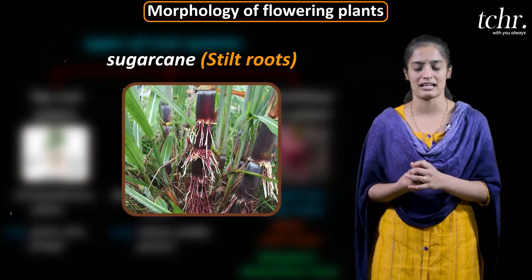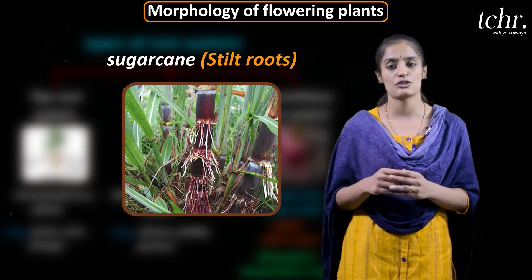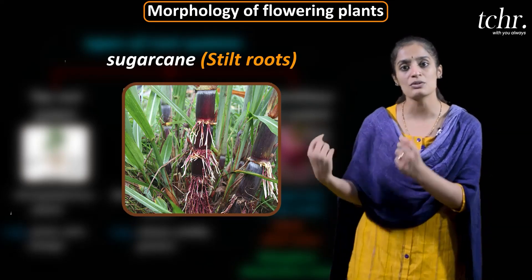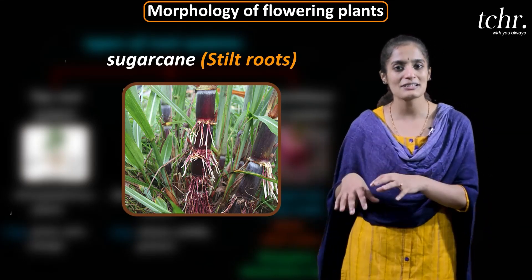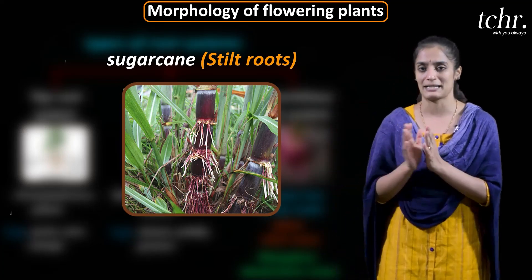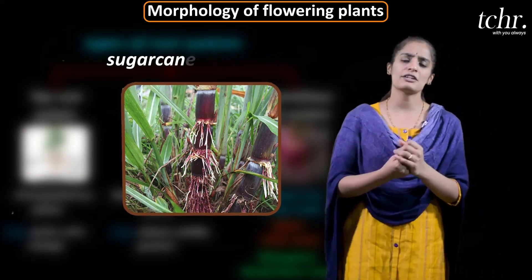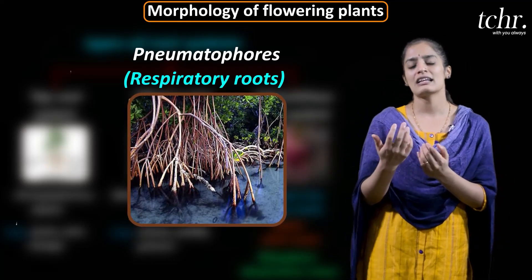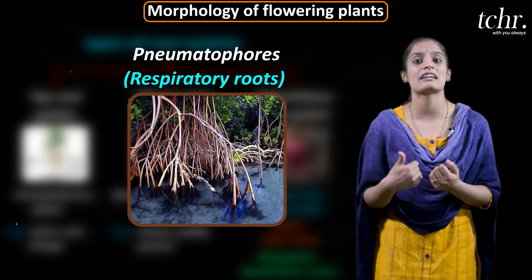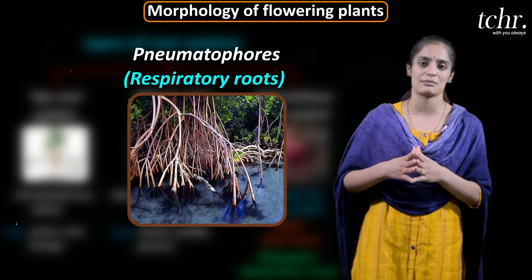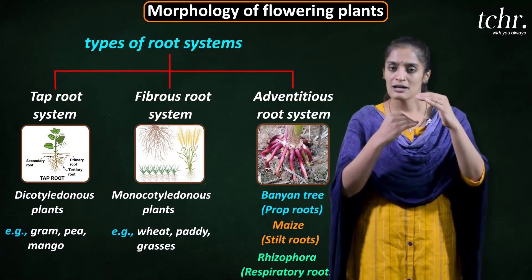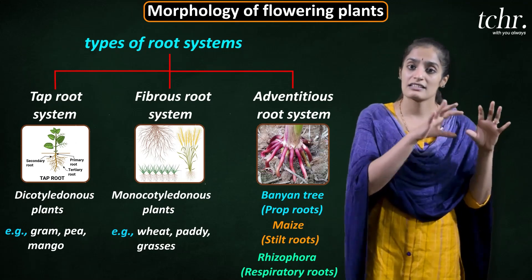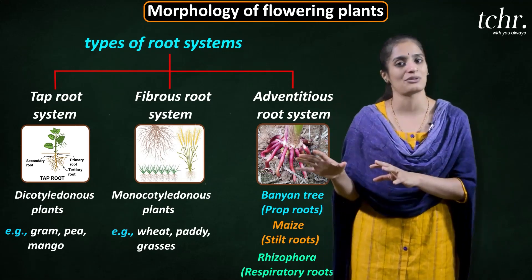Similarly, the stilt root is found at the nodal region of sugarcane near the ground, giving entire support for the plant. Apart from that, pneumatophores are a type of root that uses oxygen for respiration — they are called respiratory roots. Rhizophora is a common example. These are the key points required to revise for CET under the topic of roots.